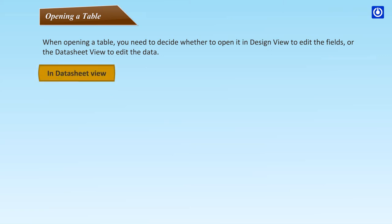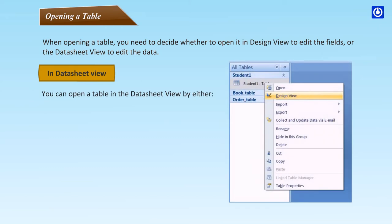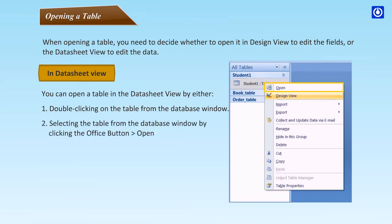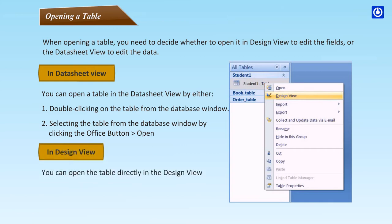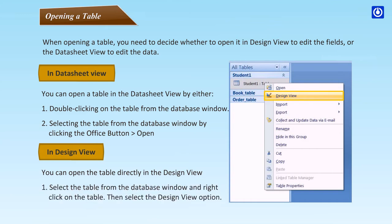In Datasheet View, you can open a table by either double-clicking on the table from the Database window, or selecting the table from the Database window and clicking the Office button, then Open. In Design View, select the table from the Database window, right-click on the table, and select the Design View option.